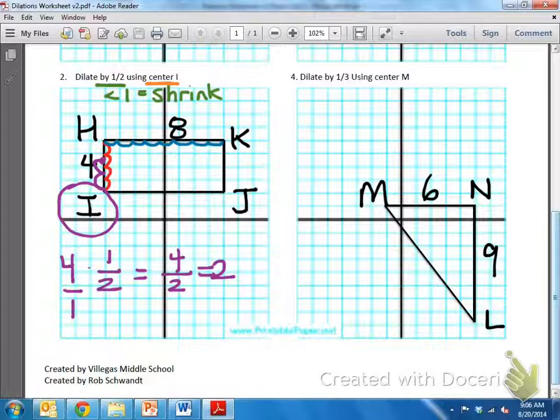Now, let's take a look at I-J. But, wait. We don't know how long I-J is. Just kidding. We know that rectangles, the lengths are the same on both sides and the widths are the same on both sides. So, H-K is eight. That means I-J is eight.